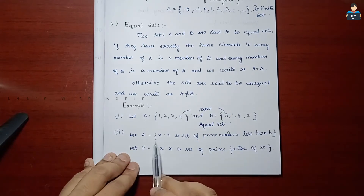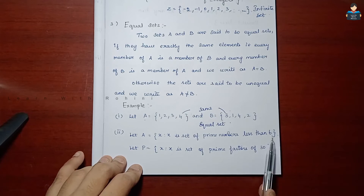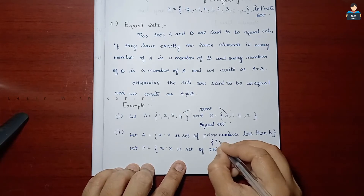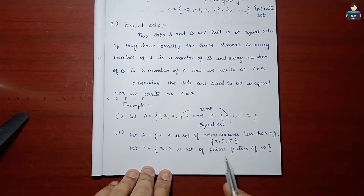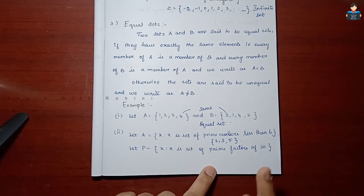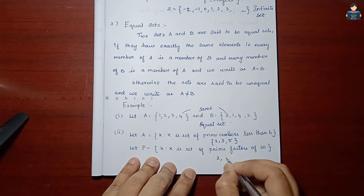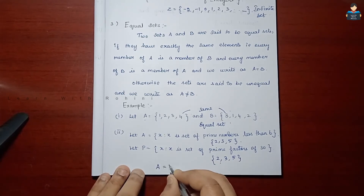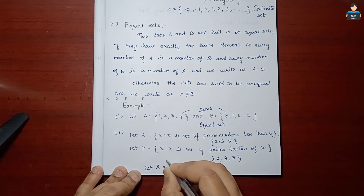Next example: let set P be the set of prime numbers less than 6, so P = {2, 3, 5}. And let set A be the set of prime factors of 30. The prime factors of 30 are also {2, 3, 5}. So set A and set P have the same elements, therefore set A = set P.